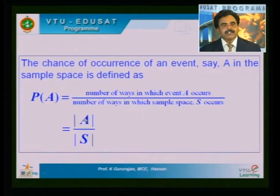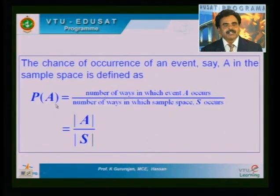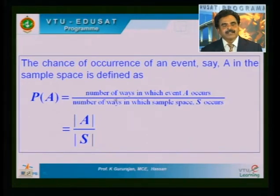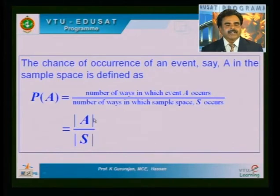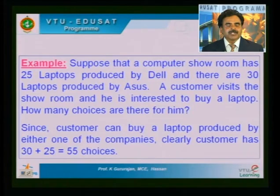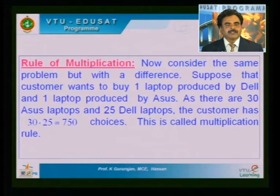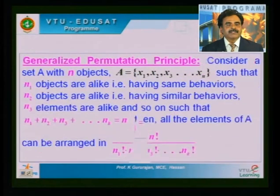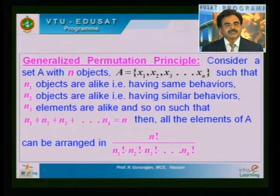The definition of probability of an event is given as the ratio of the number of ways in which event A occurs to the number of ways the sample space occurs. It is given by the formula: cardinal number of A divided by cardinal number of S. Probability theory makes use of various counting principles — rule of multiplication, rule of permutation, rule of combination, generalized permutation, etc. The counting principle serves as a tool in the evaluation of probability of occurrence of an event.